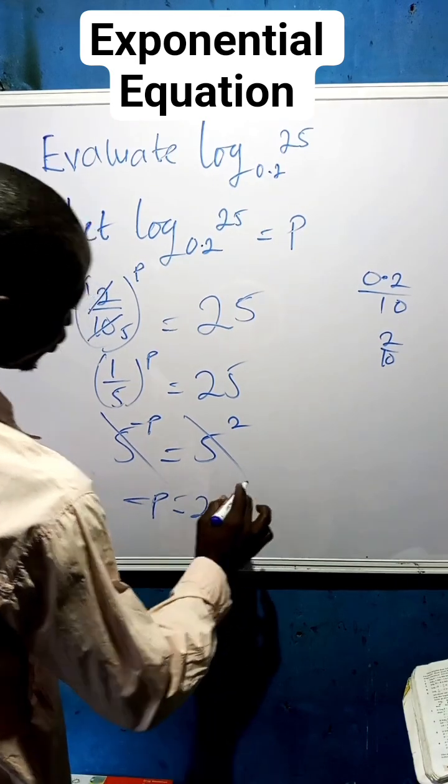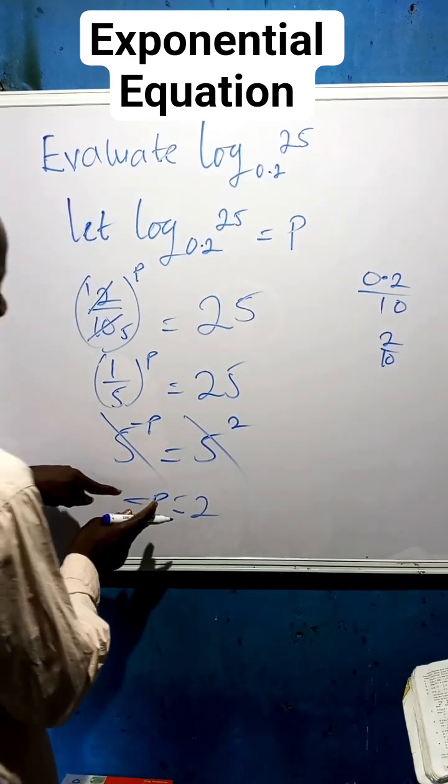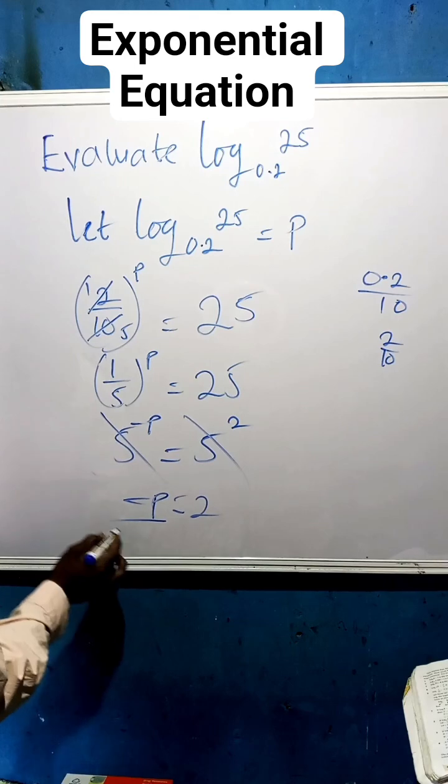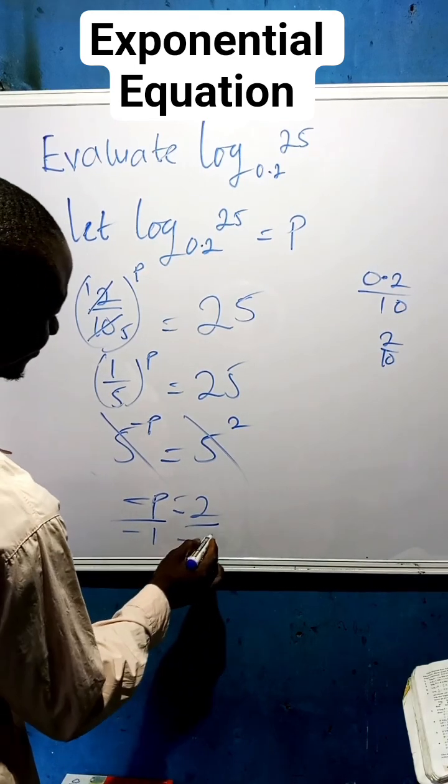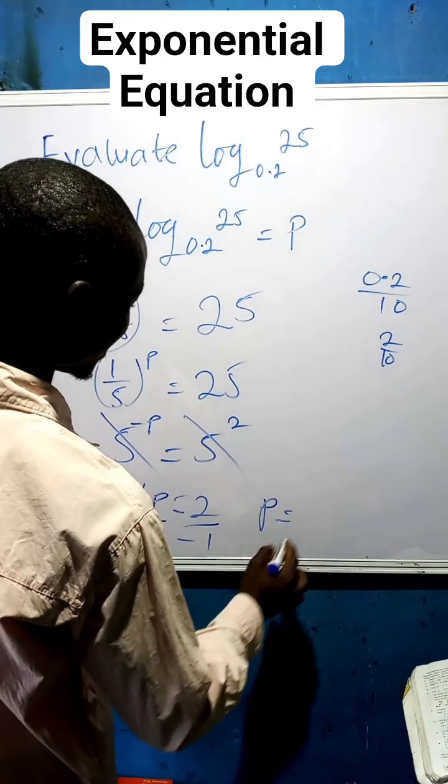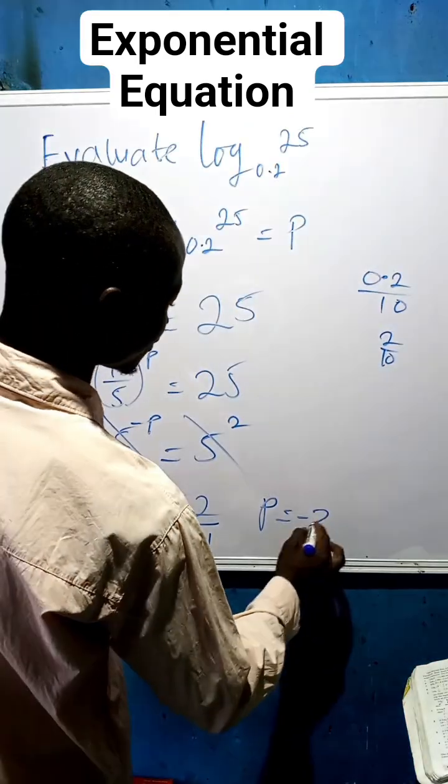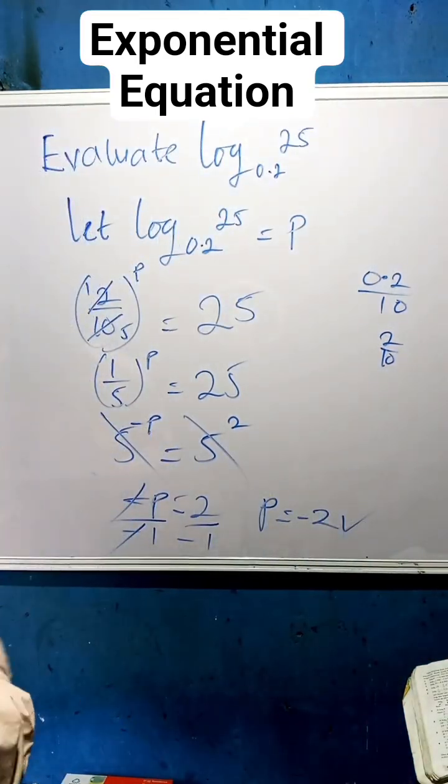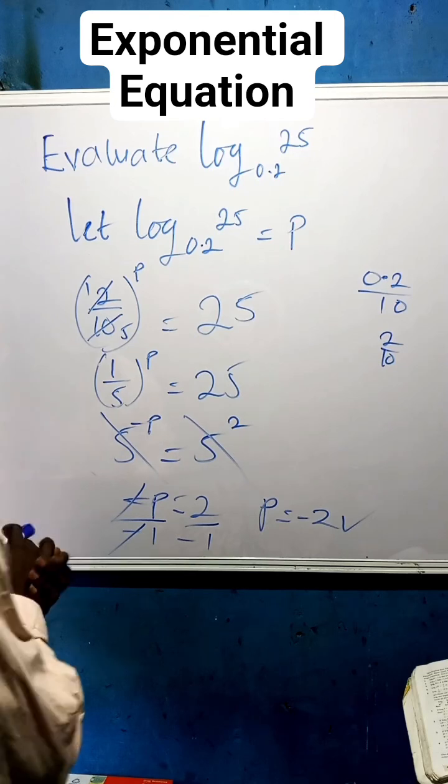So we're not going to have minus P equals to 2. We are looking for P, not minus P. So divide both sides by minus 1, so that minus cancels minus, and our P is now equals to minus 2. This is our final answer.